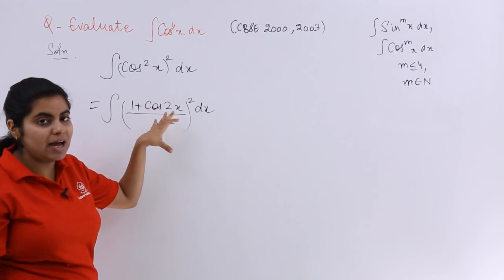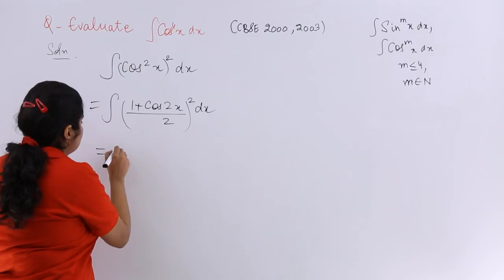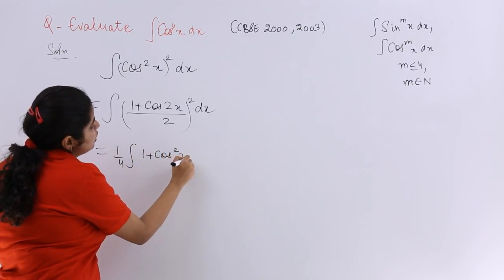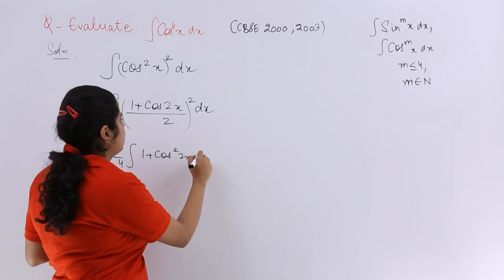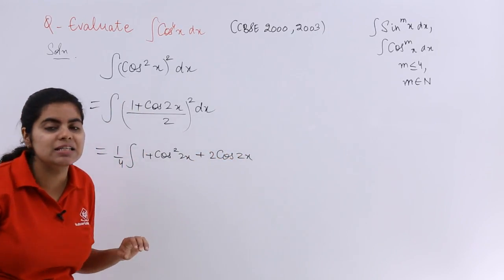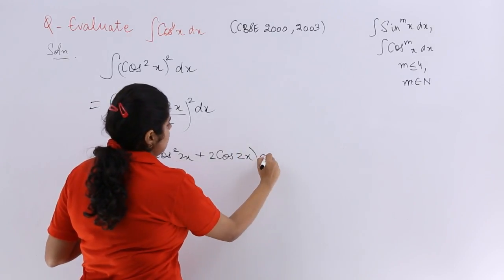Now I have to expand this given bracket. So 1 by 4 remaining outside, 1 plus cos square 2x plus 2 cos 2x. I am basically using the identity a plus b whole square, outside remains dx.